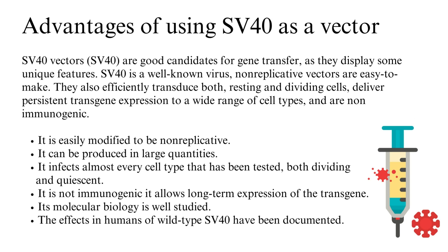SV40 vectors are good candidates for gene transfer as they display some unique features. SV40 is a well-known virus; non-replicative vectors are easy to make. They efficiently transduce both resting and dividing cells, deliver persistent transgene expression to a wide range of cell types, and are non-immunogenic. SV40 can be easily modified to be non-replicative, produced in large quantities, and infects almost every cell type tested — both dividing and quiescent. It allows long-term expression of the transgene, its molecular biology is well studied, and the effects of wild-type SV40 in humans have been documented.